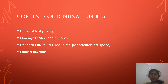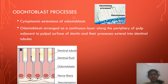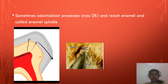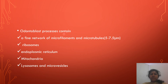The contents of the dentinal tubule include the odontoblast process, non-myelinated nerve fibers, dentinal fluid, and lamina limitans. The odontoblast process is located just beneath the dentine and their cytoplasmic processes extend from the odontoblast into the dentinal tubules. Sometimes these odontoblast processes may cross the dentino-enamel junction and reach the enamel — they are called enamel spindles. The odontoblast processes contain a fine network of microfilaments and microtubules, ribosomes, endoplasmic reticulum, mitochondria, lysosomes, and microvesicles.